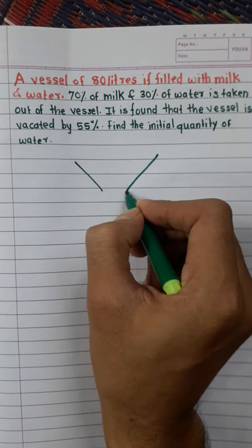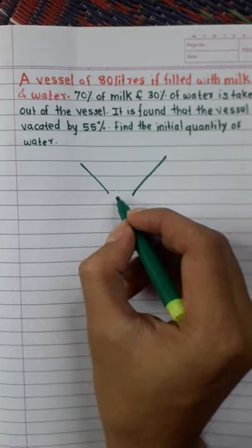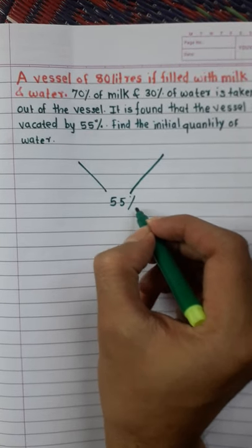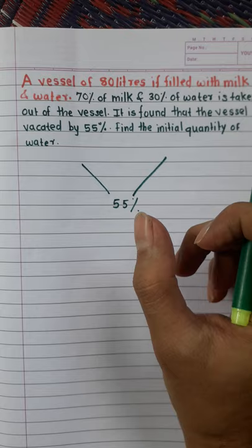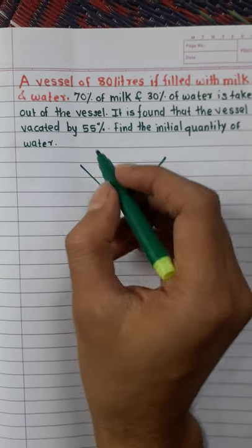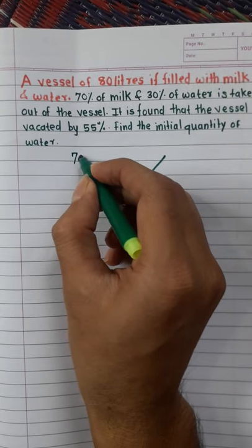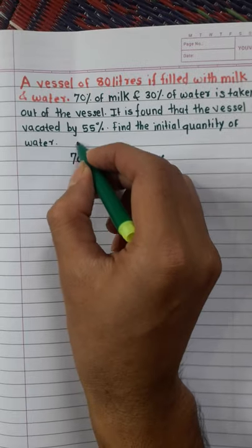So total 55% is removed from the 80 liter vessel, from which 70% milk is removed and 30% water is removed.